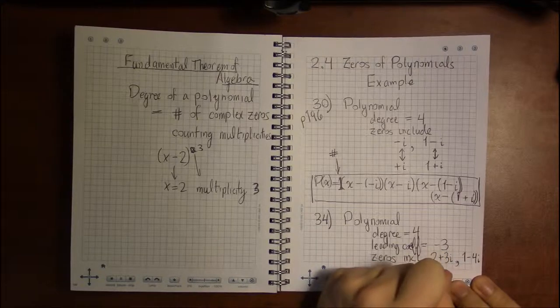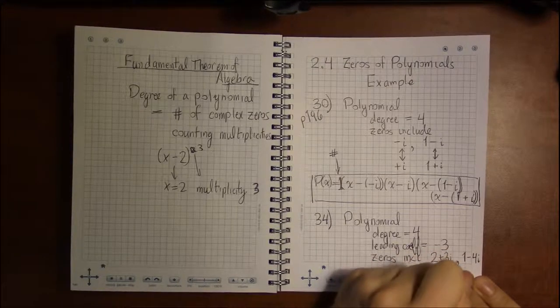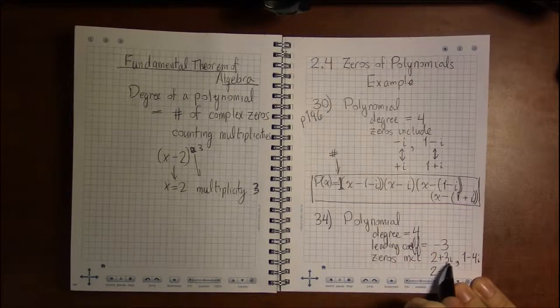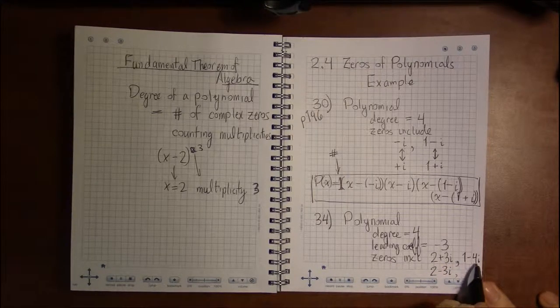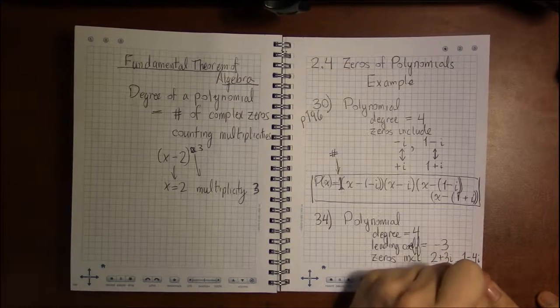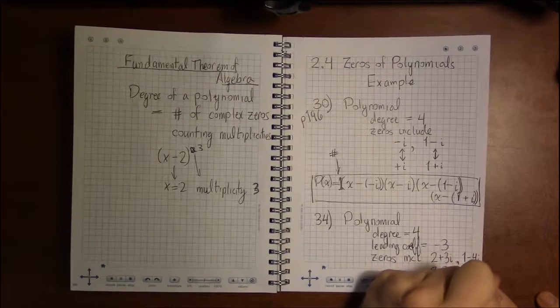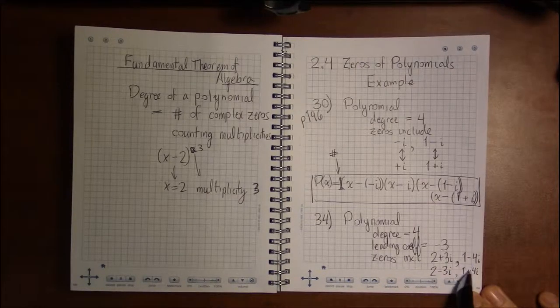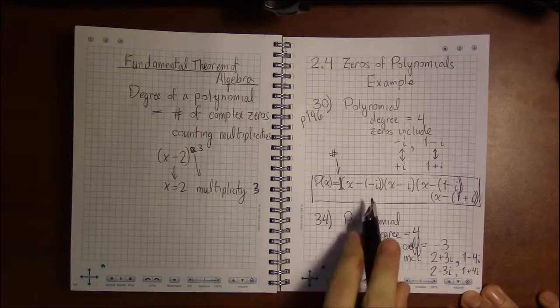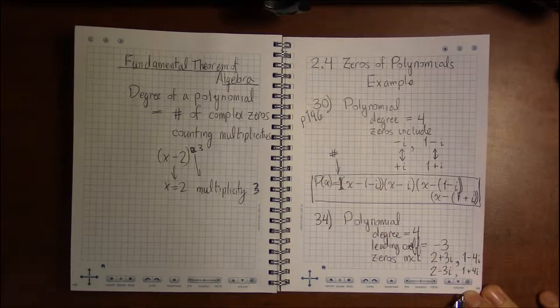We'll use the Conjugate Pair Theorem to say that if two plus three i is a zero, then two minus three i is a zero. If one minus four i is a zero, then one plus four i must also be a zero. For each of these zeros we will create their associated factor.